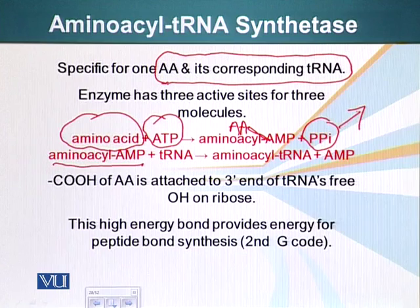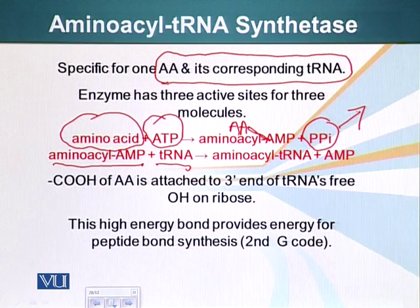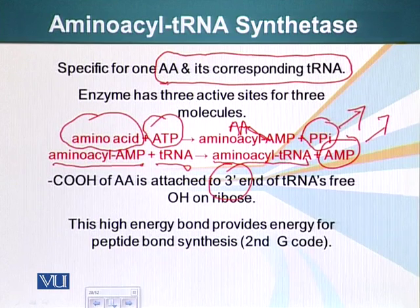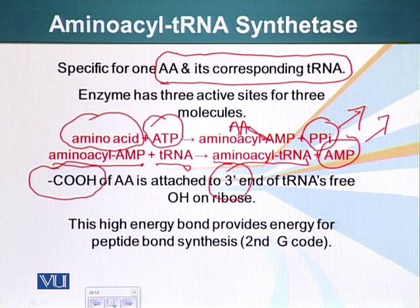The aminoacyl AMP and tRNA come to this enzyme. The enzyme catalyzes the next reaction — it transfers the aminoacyl AMP bond, making aminoacyl tRNA, and AMP is released. So this tRNA now carries a particular amino acid. The carboxy domain of the amino acid is attached to the 3' hydroxyl group on the ribose of the tRNA — that is, the hydroxyl group on the 3' carbon in the pentose sugar.